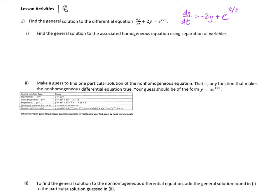You start by finding the general solution to the associated homogeneous equation using separation of variables. The associated homogeneous equation says just drop the complicated stuff — we get rid of the function of t that we're adding on to the end. So we have dy/dt equals negative 2y. It may be that you've solved a problem like this so many times you can just write the solution down, but I'll do separation of variables to remind you how it works.